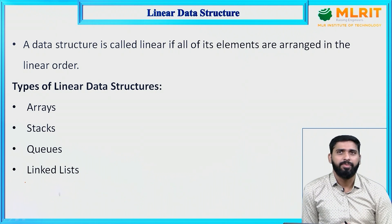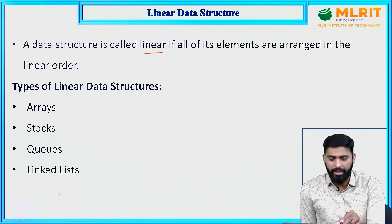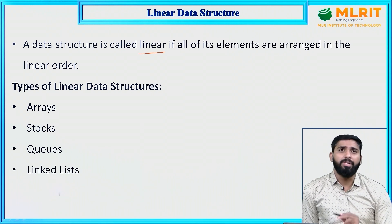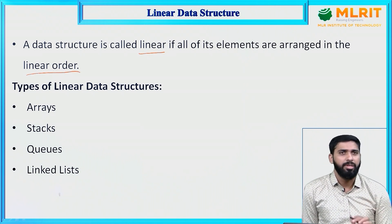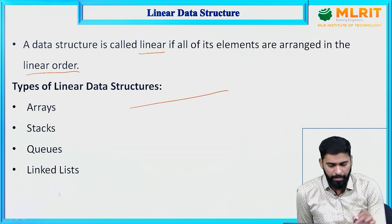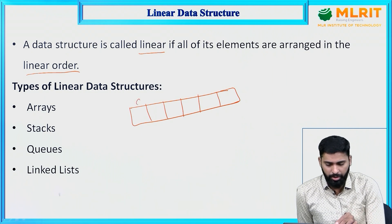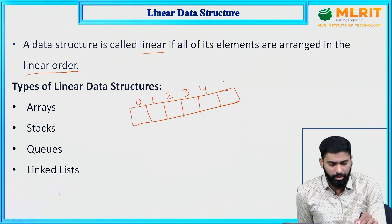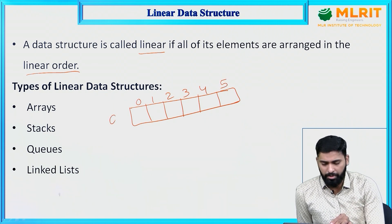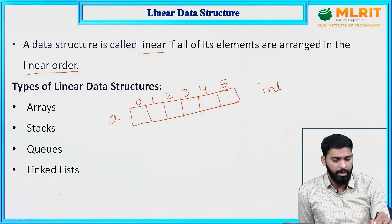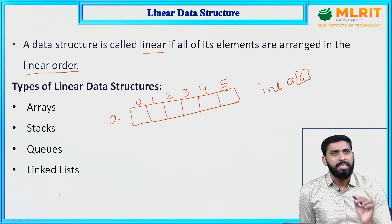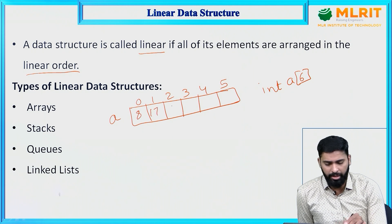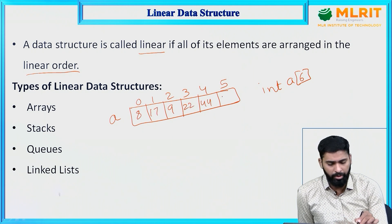A data structure is called linear if all of its elements are arranged in linear order — that means sequential order. For example, consider an array of size 6: indices 0 through 5, array name A, declared as int a[6]. We store 6 elements: 8, 17, 9, 22, 44, 33.